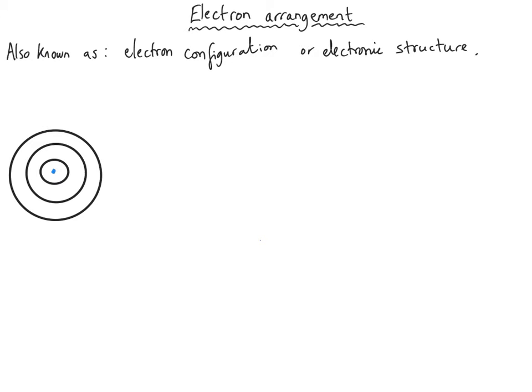Now let's look at electron arrangement, sometimes called electron configuration or electronic structure — all of these mean: where do we find the electrons in the atom? We already know electrons are found in shells, also referred to as energy levels. All atoms have energy levels; some are filled, and there's always one on the outside considered to be the outer shell. The rule is that you fill up from the central shell and work outwards once that shell is full — you must fill each shell before moving on to the next.